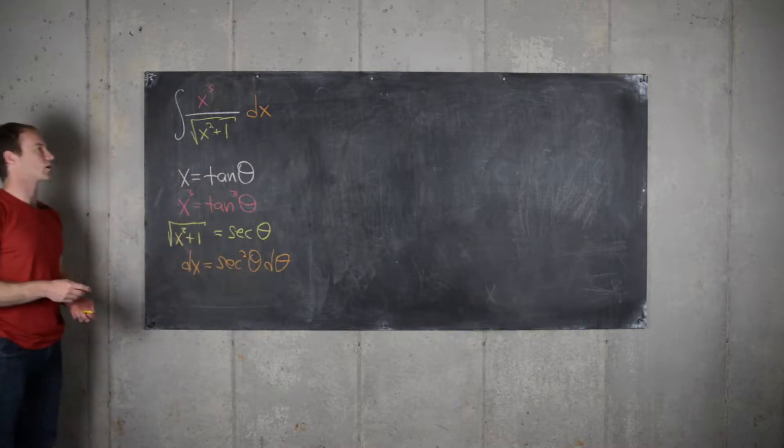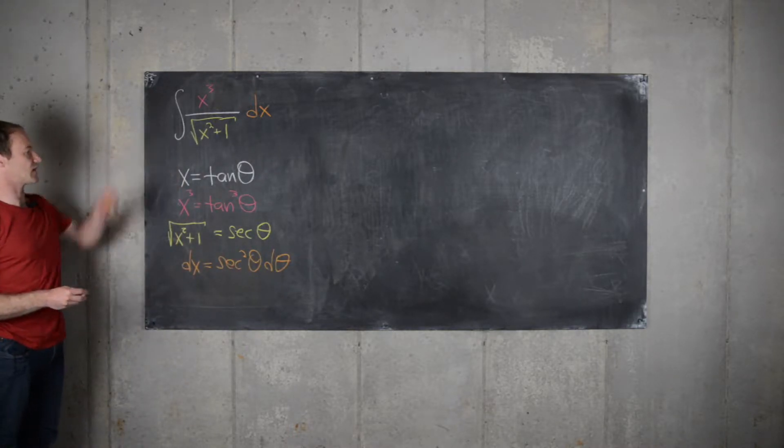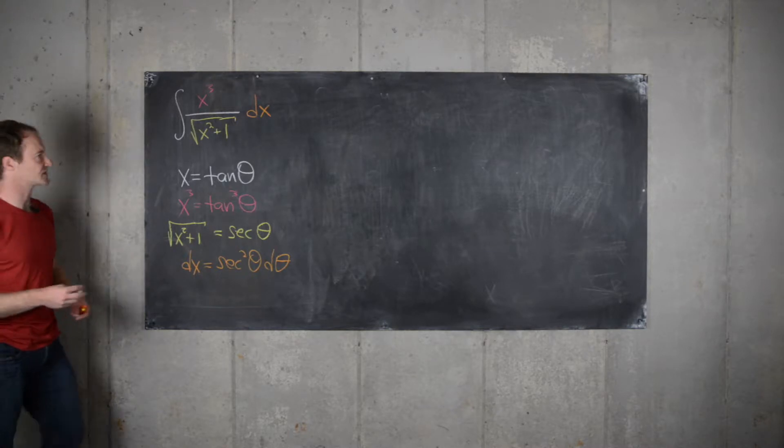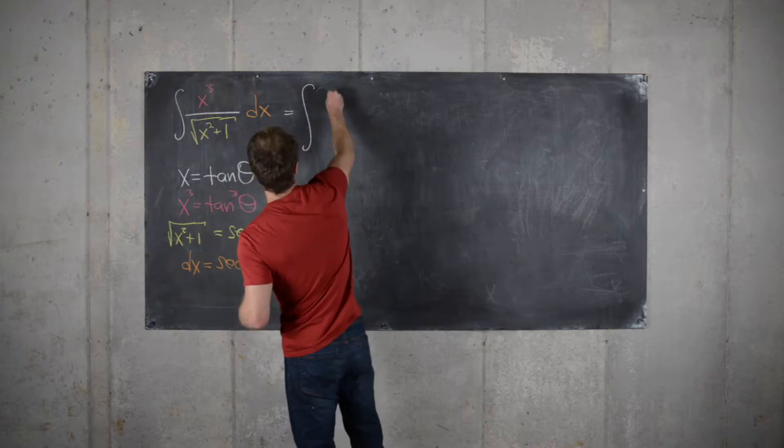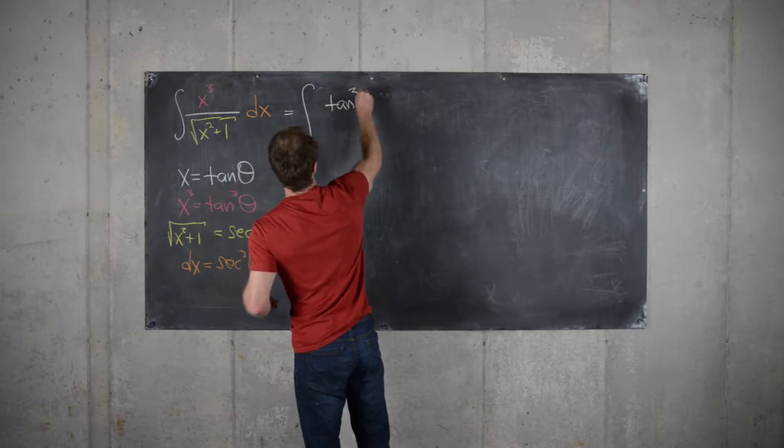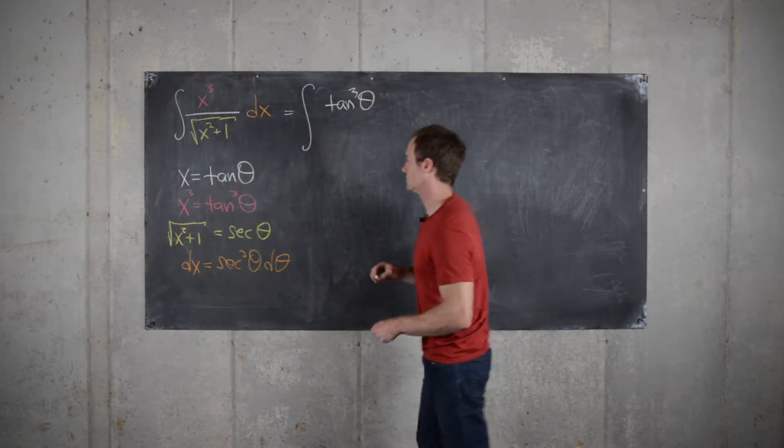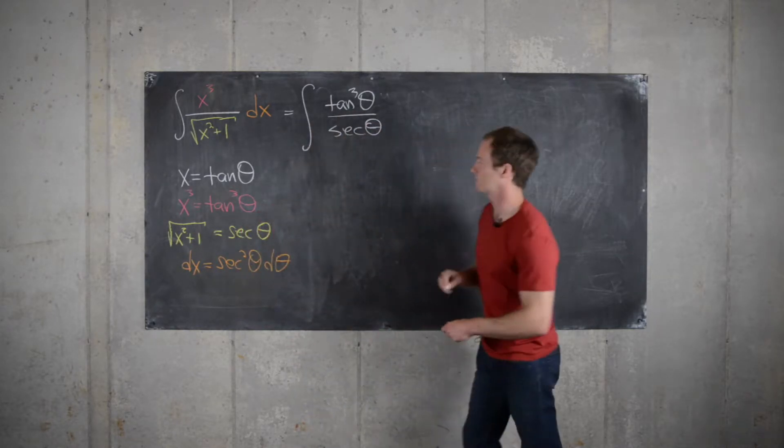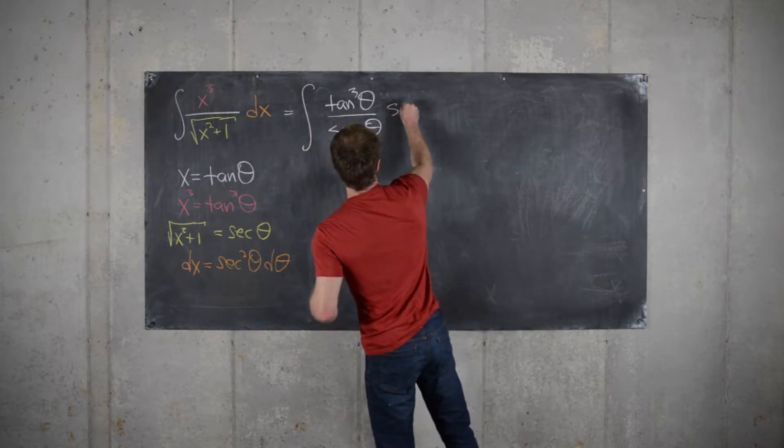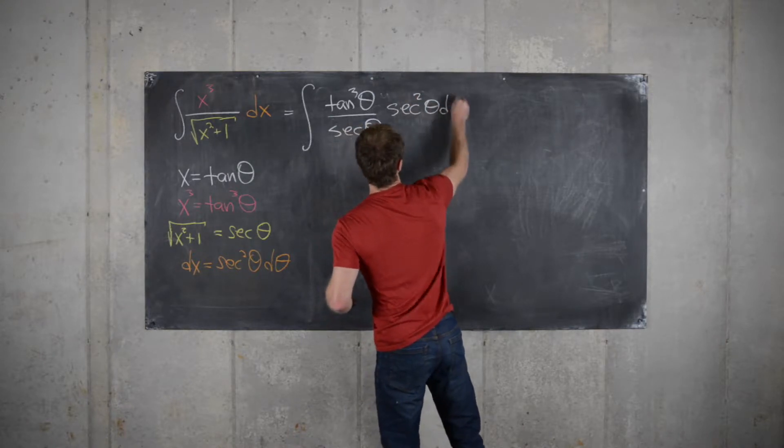So now we're all set to replace the parts of our original integral with these trig functions. So let's see what we get. We get tangent cubed theta from the x cubed over secant theta times secant squared theta d theta.